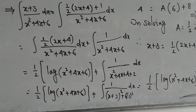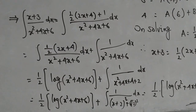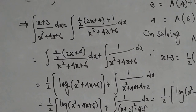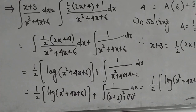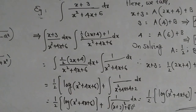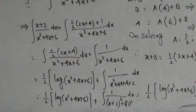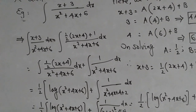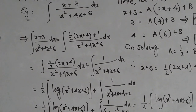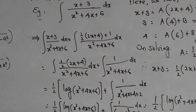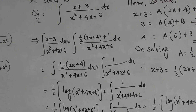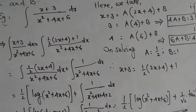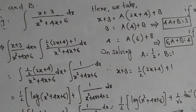For the second integral, 1 divided by (x squared plus 4x plus 6), we integrate by completing the square. We write x squared plus 4x plus 6 as (x squared plus 4x plus 4) plus 2, which becomes (x plus 2) squared plus (root 2) squared. On integrating, that becomes 1 upon (2 times root 2) times tangent inverse of (x plus 2) divided by root 2 plus C. Combining both parts, the final answer is (1/2) log(x squared plus 4x plus 6) plus (1 upon root 2) times tangent inverse of (x plus 2) divided by root 2 plus C.